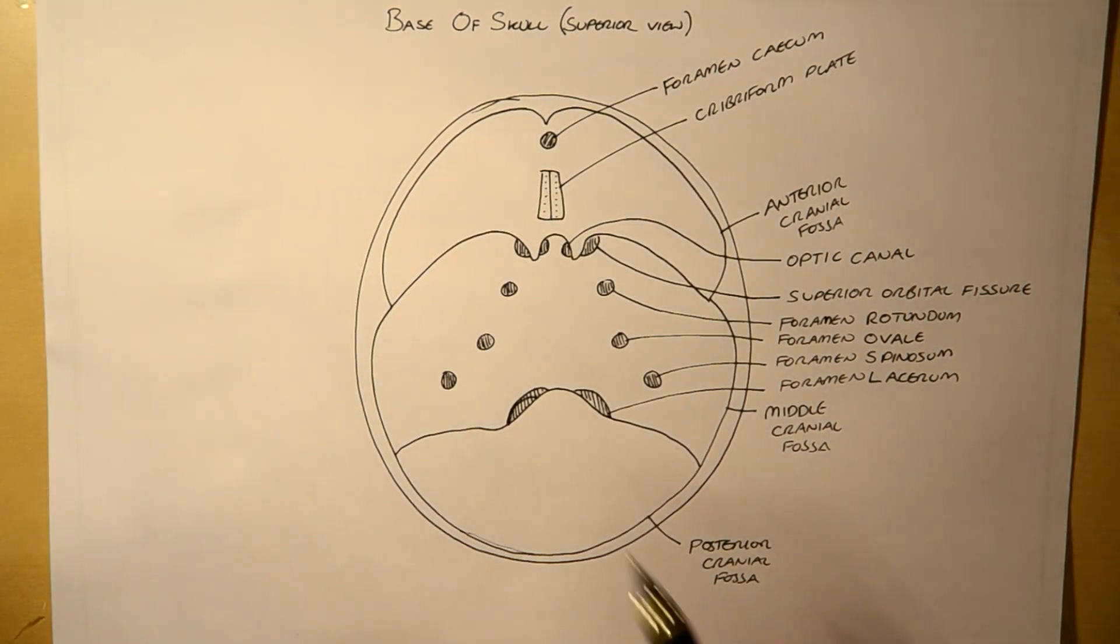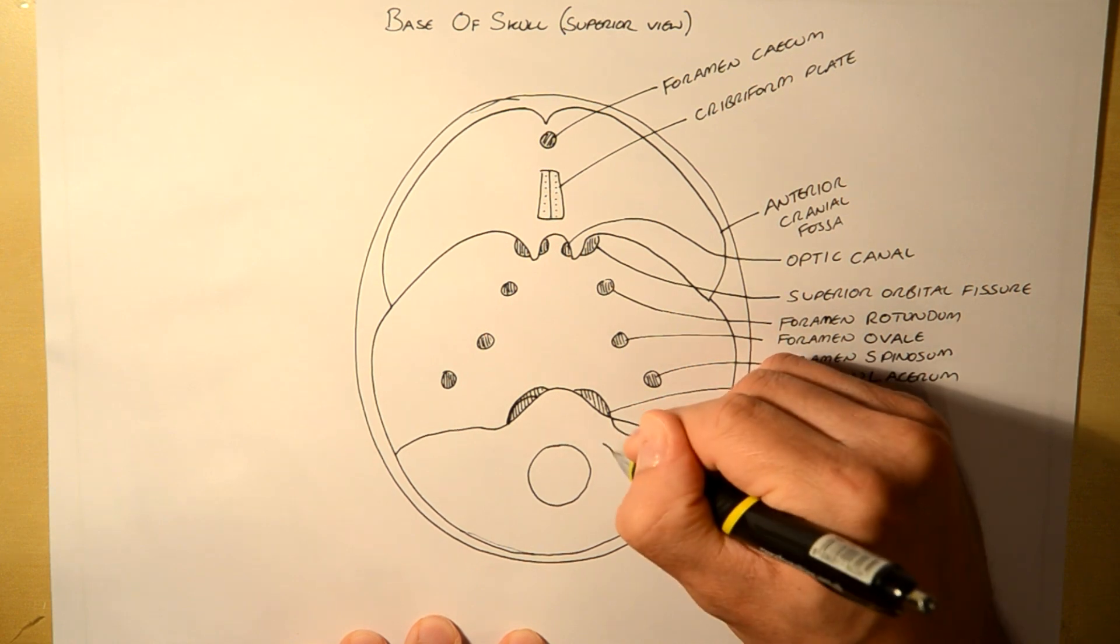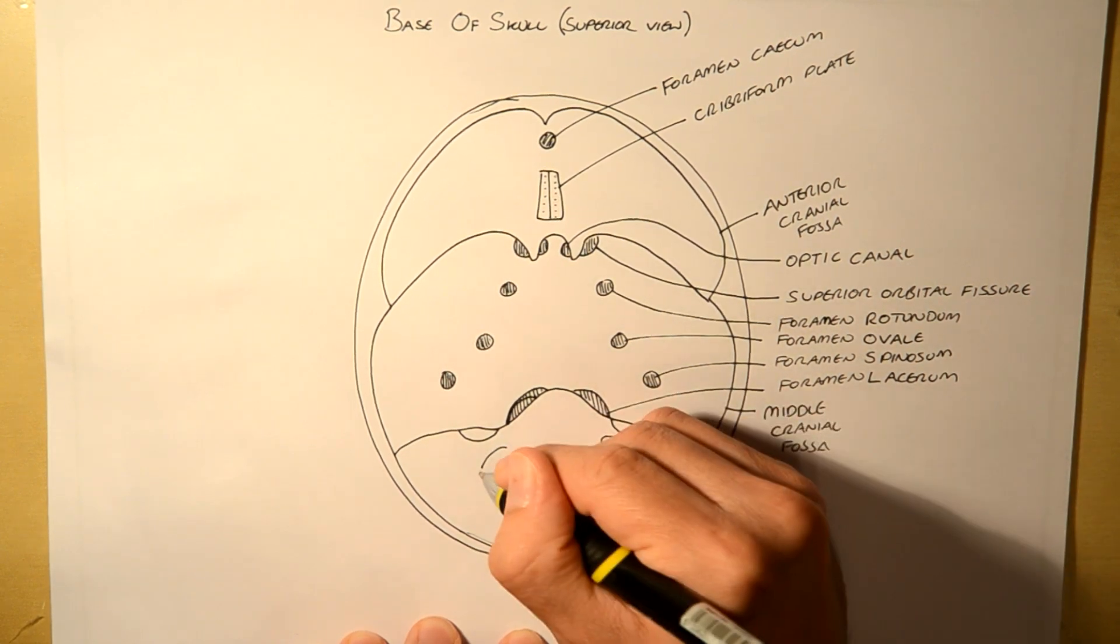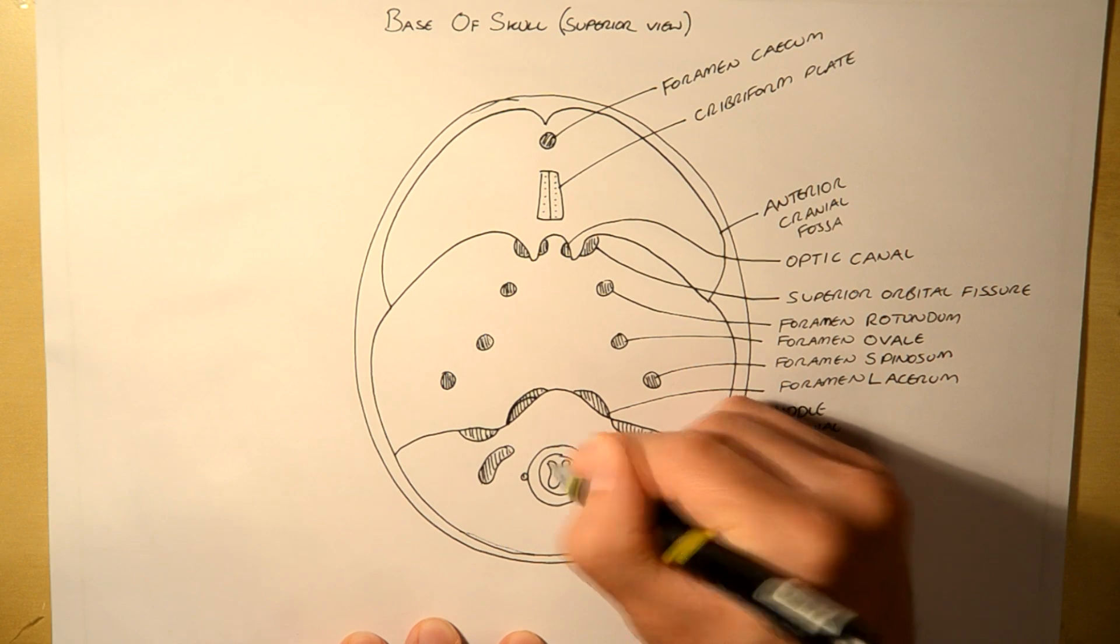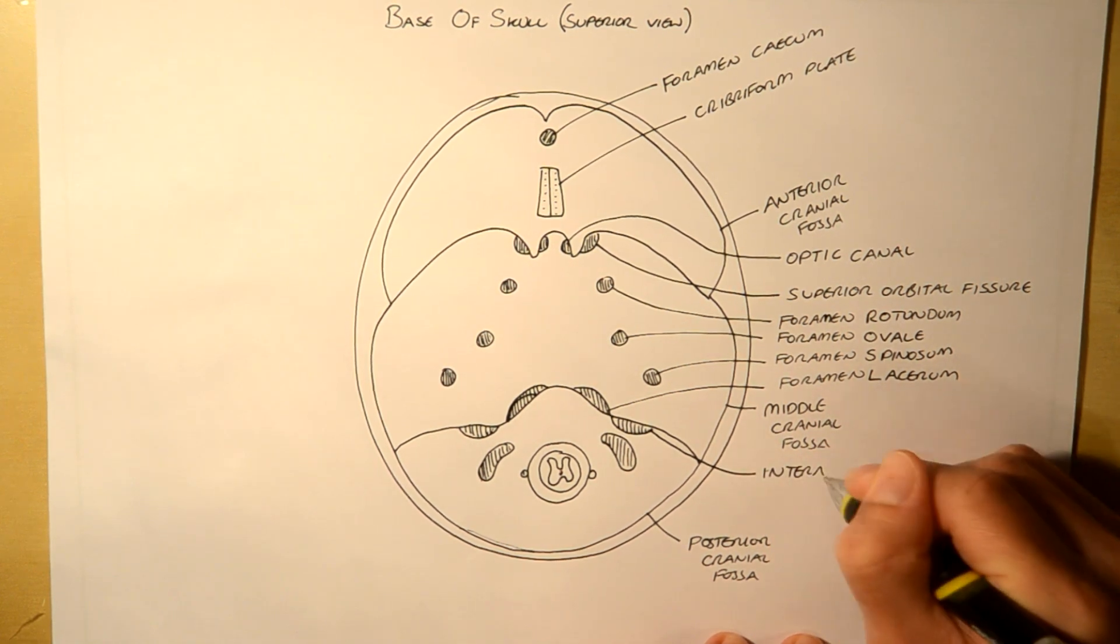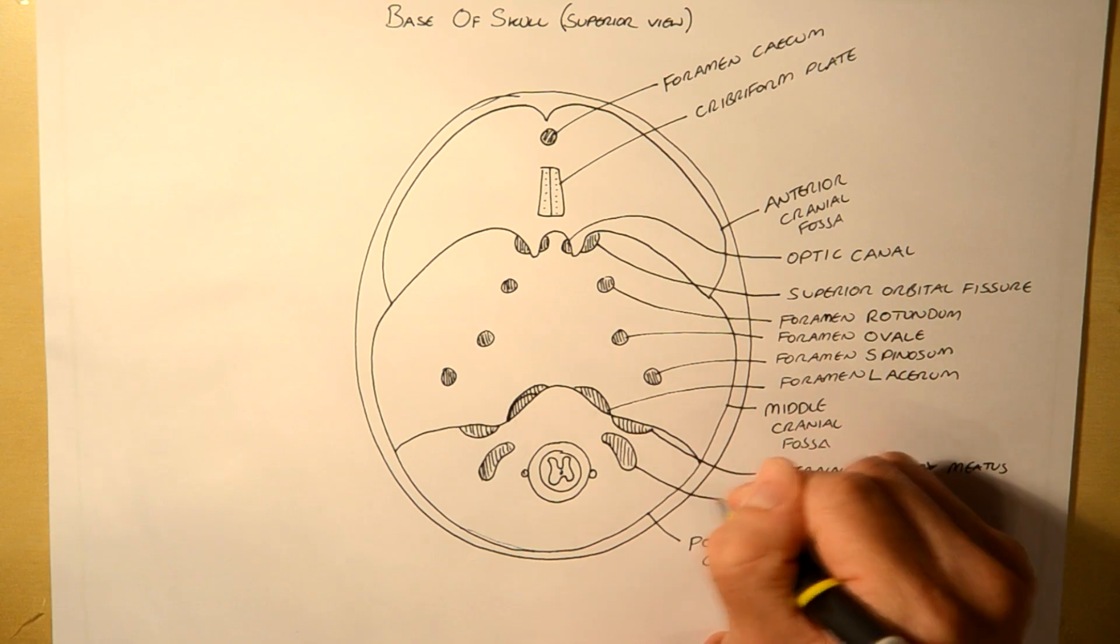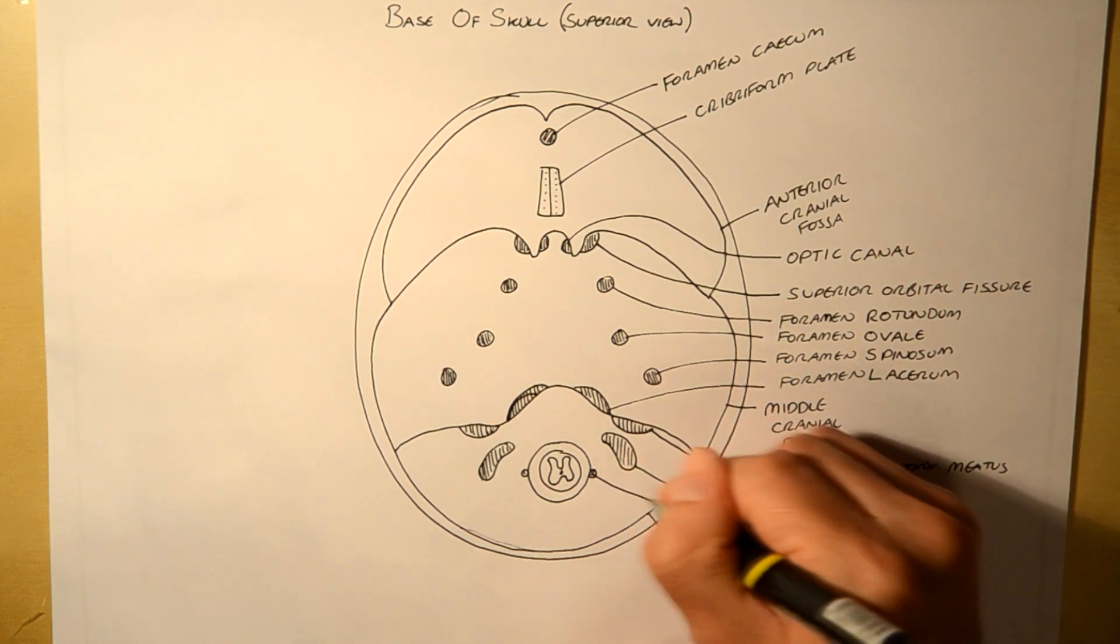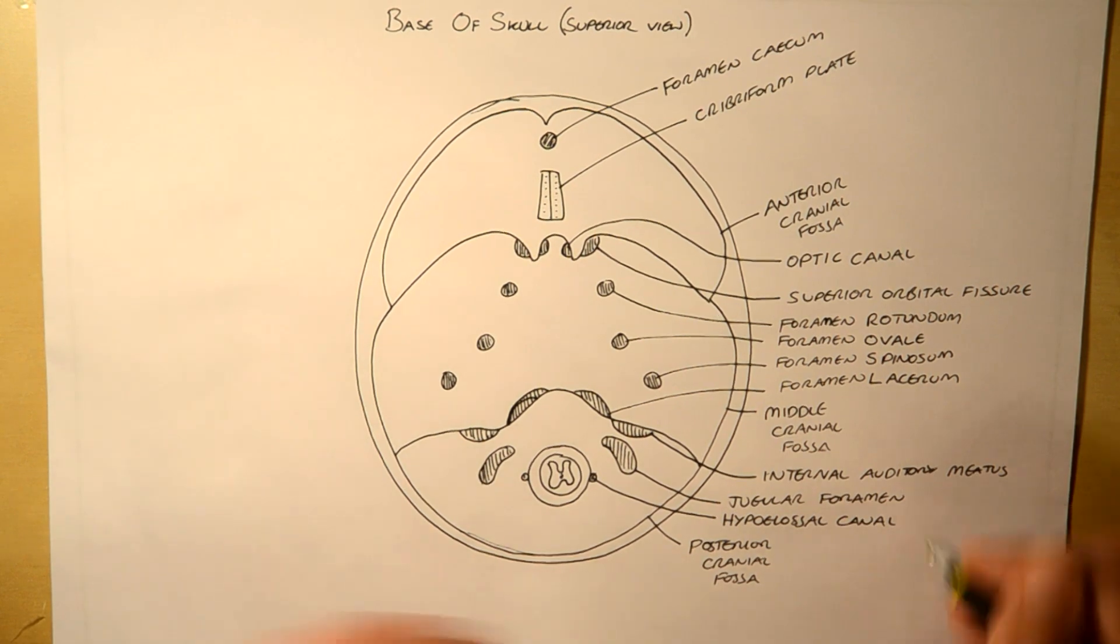Lastly, we've got the posterior cranial fossa. So we're just going to draw it in. So you draw a big circle here, and three more. One, two, three. That's one, two, and three. Okay. So now we've drawn them in. This is the internal auditory meatus, the jugular foramen, hypoglossal canal, and the big boy, foramen magnum.